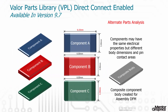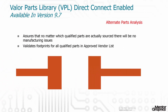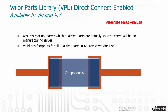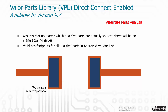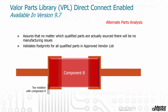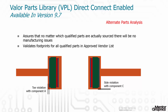Another very important capability of Valor Parts Library is the ability to analyze alternate parts. As you import your BOM into Valor NPI with alternate parts included, the system lays each of the parts — including the alternate parts — over its respective footprint for analysis. This assures that no matter which qualified parts are actually sourced, there will be no manufacturing issues. In this example, component A violates the toe spacing, while component B has no issues.